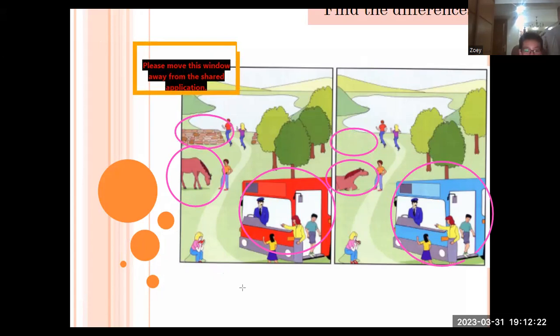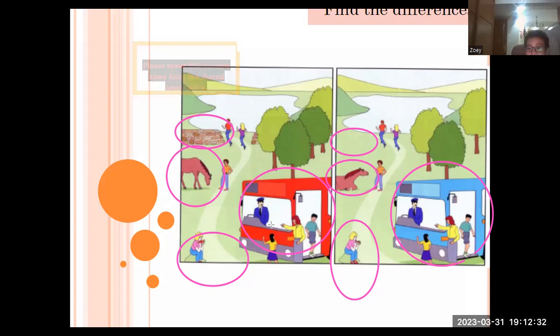Okay, so one, two, three, four. I think there's still one more difference. One more difference. Can you see it? Yes, that's right, very good. Can you please say it? In picture one, there are four trees. In turn two, there are three trees.